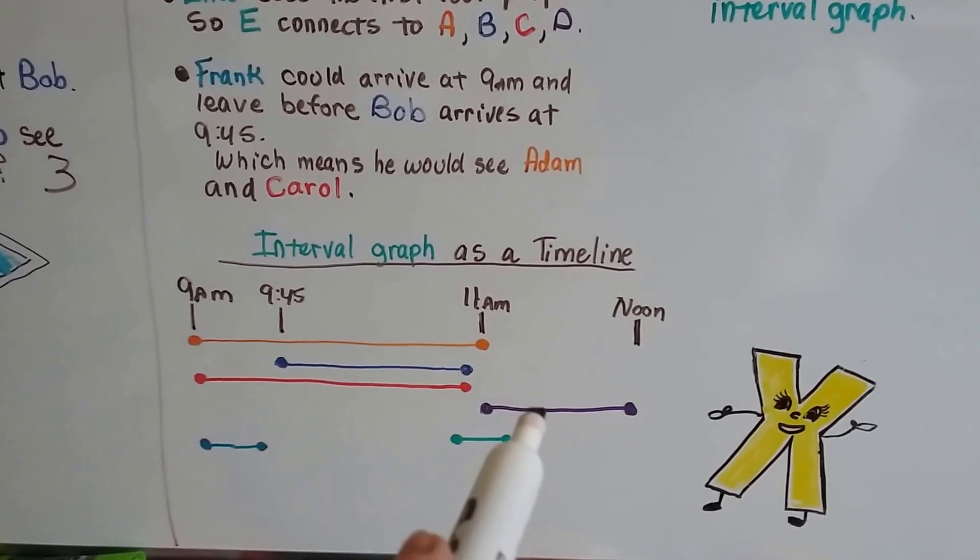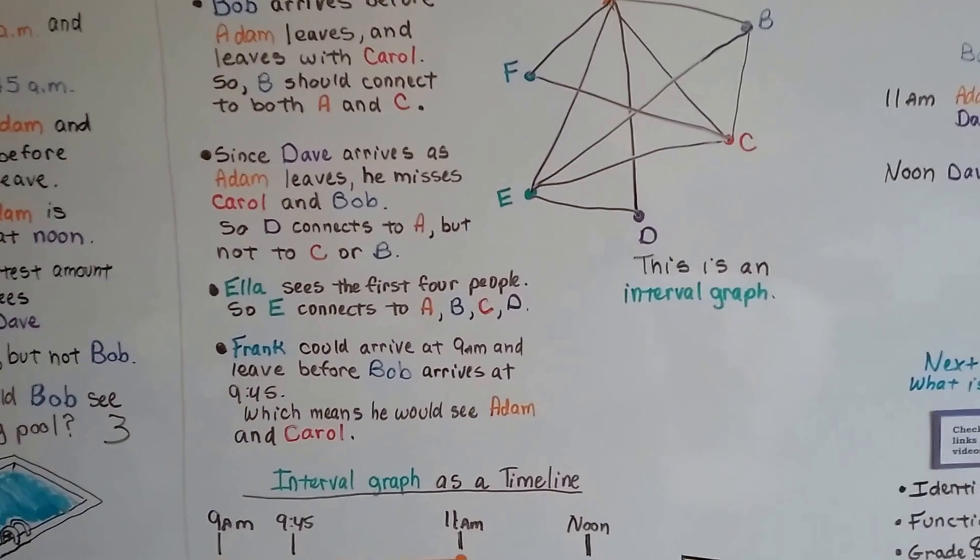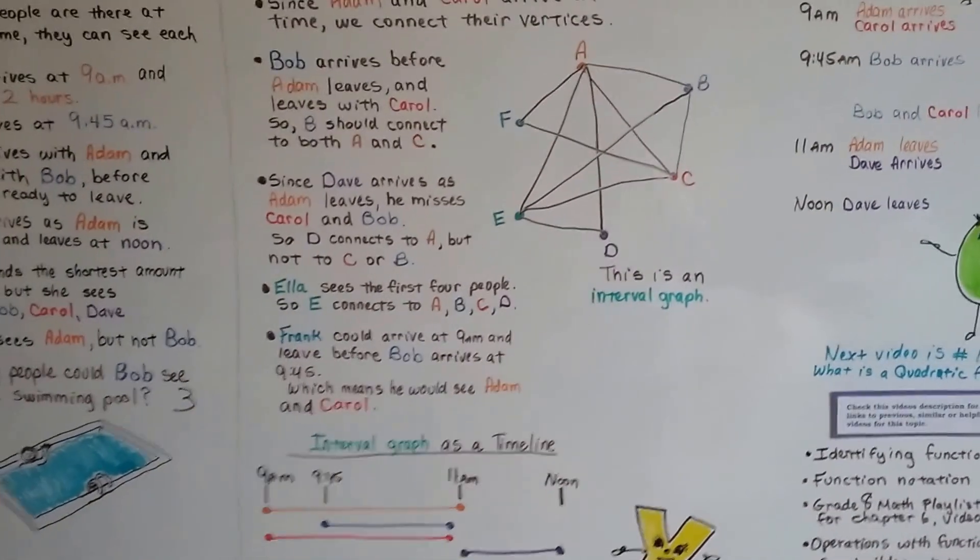Frank doesn't see Dave. He's way over here. So F is not connected to D. That's an interval graph, no big deal.